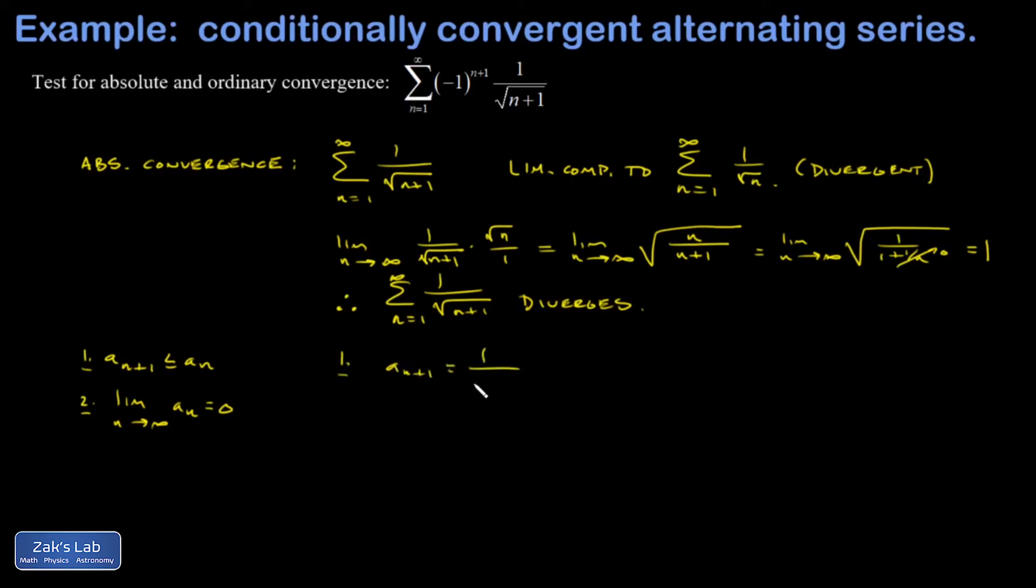a n plus 1 is 1 over square root of n plus 1 plus 1, that's 1 over square root of n plus 2. a n is 1 over square root of n plus 1. So in this case, it's just crystal clear that the denominator of a n plus 1 is a bigger thing. It's one bigger inside the square root. So it's got to be a smaller result. So a n plus 1 is actually strictly less than a n. So we win on number 1.